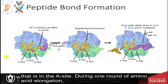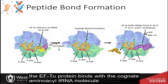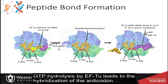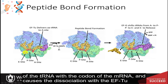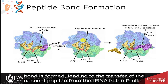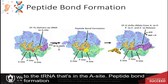During one round of amino acid elongation on the nascent peptide, the EF2 protein binds with the cognate aminoacyl tRNA molecule and shuttles it to the A site of the ribosome. GTP hydrolysis by EF2 leads to hybridization of the anticodon of the tRNA with the codon of the messenger RNA and causes the dissociation of EF2, now GDP-bound, from the ribosome. Following the dissociation of EF2, the peptide bond is formed, leading to the transfer of the nascent peptide from the tRNA in the P site to the tRNA in the A site.